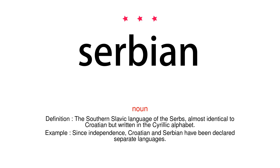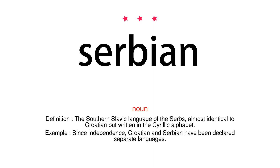Noun. Definition: The Southern Slavic language of the Serbs, almost identical to Croatian but written in the Cyrillic alphabet. Example: Since independence, Croatian and Serbian have been declared separate languages.